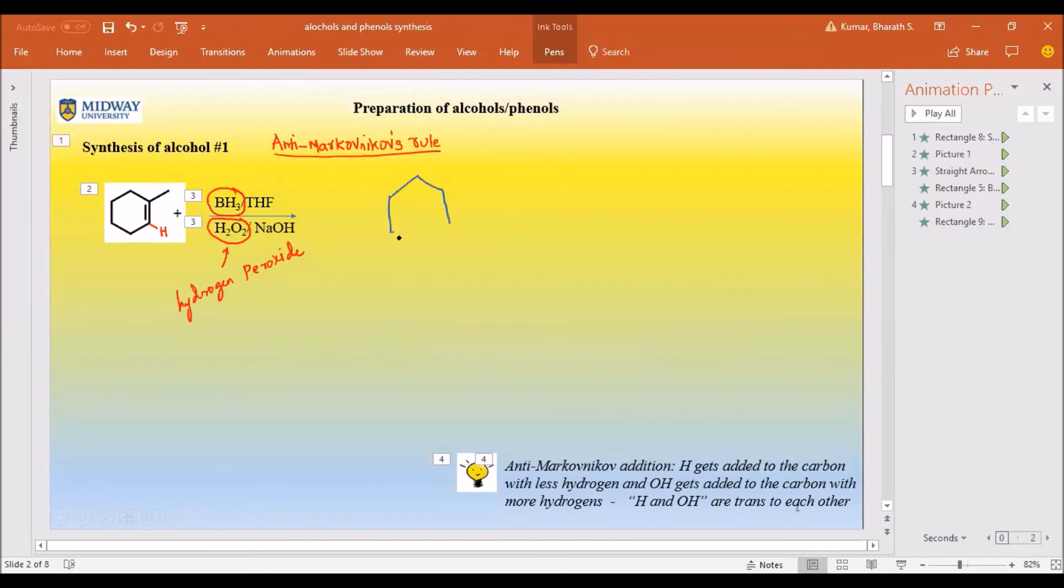It's very important that you pay attention to the cis and trans, which I'm going to emphasize in this particular video. Once you add it, the double bond would no longer be there. This is a carbon containing less hydrogen, so that's where the hydrogen would go. I am going to highlight it.